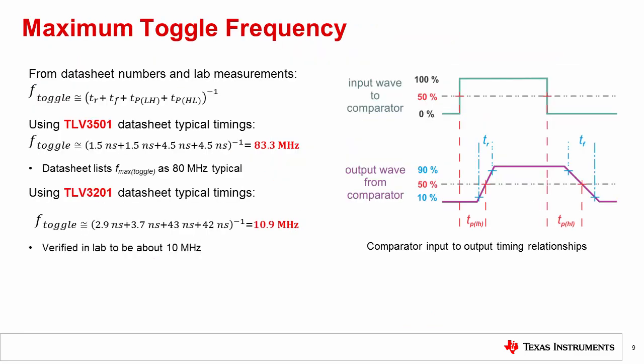The final comparator specification we'll discuss in this video is called maximum toggle frequency, or the maximum switching frequency of the comparator. This specification gives us an impression of the overall speed of a comparator and can be calculated using the equation shown here.